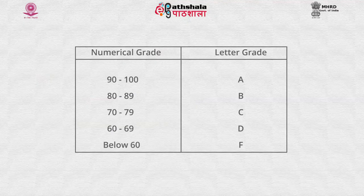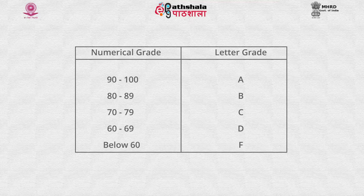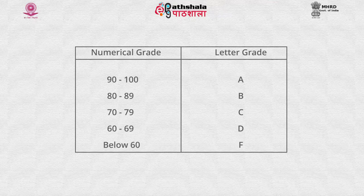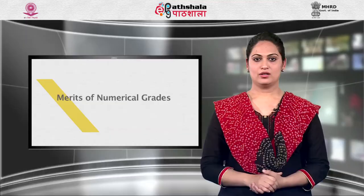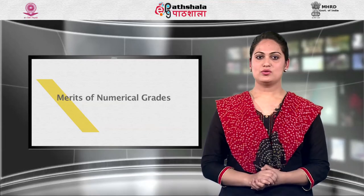Numerical grade 90 to 100 is equivalent to letter grade A, numerical grade 80 to 89 is equivalent to letter grade B, 70 to 79 is C, 60 to 69 is D, and below 60 is equivalent to F.